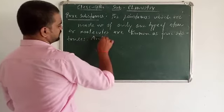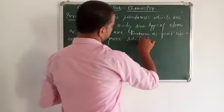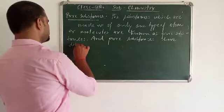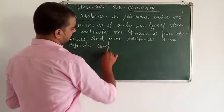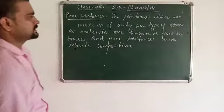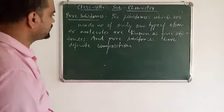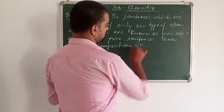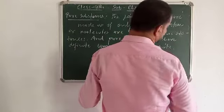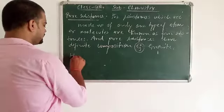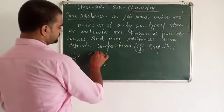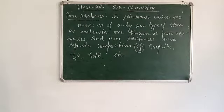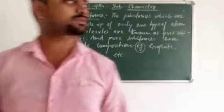Pure substances have definite compositions. For example, graphite, gold, etc. These are some examples of pure substances. So pure substances are again of two types: element and compound. Let me talk about the definition of element.